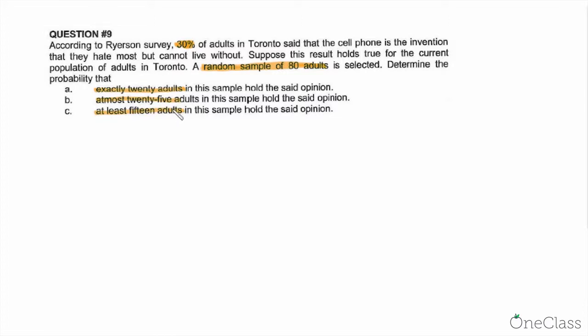First of all, we know that this is a binomial distribution question because they gave us a random sample, which is n equals 80. And they gave us the success probability. It's a binomial distribution. They gave us 30%, but since it's in percentage, it has to be less than 1.